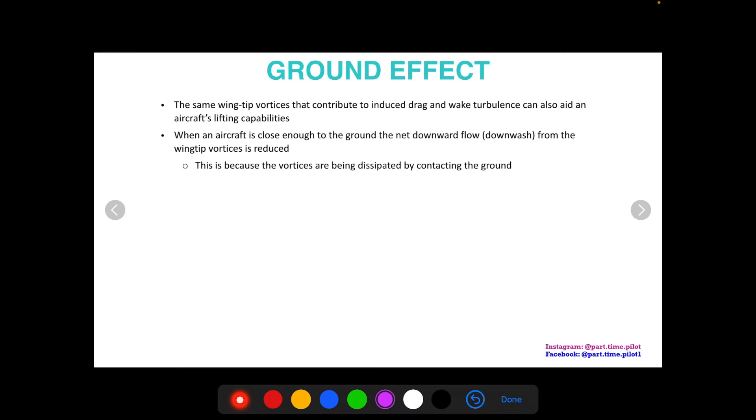When an aircraft is close enough to the ground, the net downward flow, the downwash from these wing tip vortices, is reduced. This is because the vortices are being dissipated by contacting the ground. These swirling vortices hit the ground and they kind of disperse, they get destroyed.